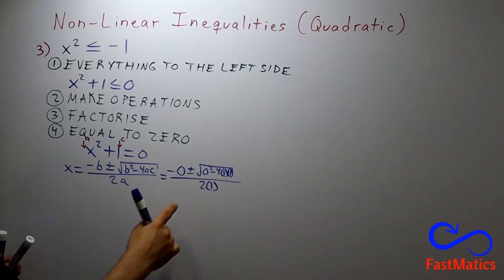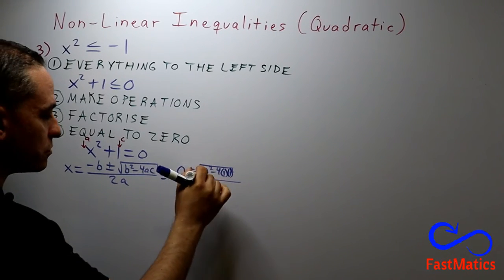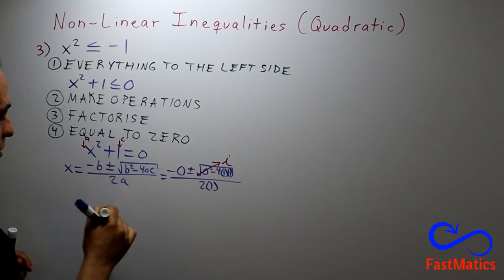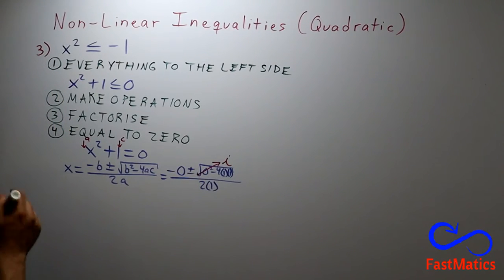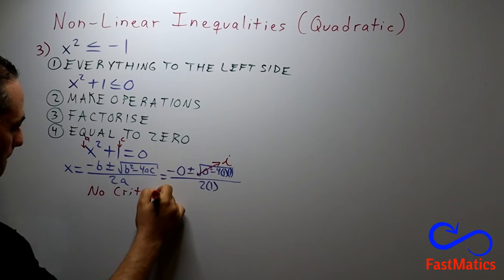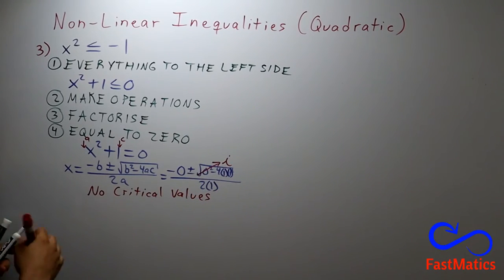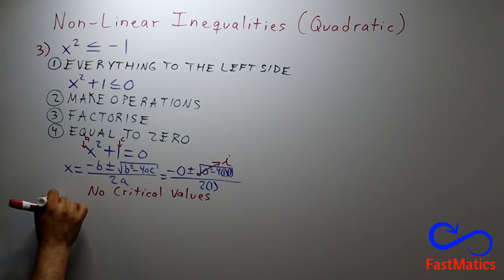And pay attention. Here, if you solve it, you will have the square root of negative 4. And the square root of negative 4 is imaginary. So, we do not have critical values. No critical values here. Step 5.